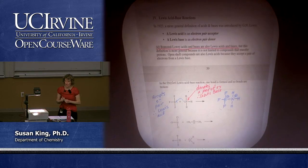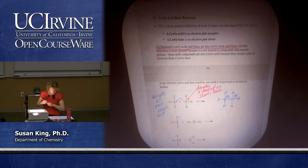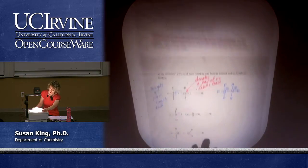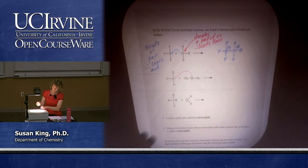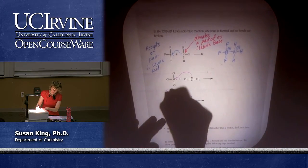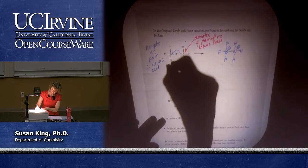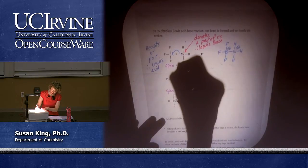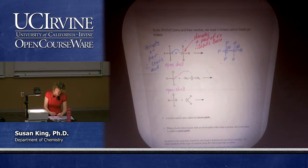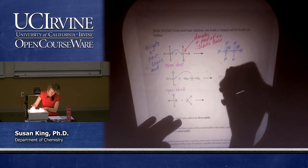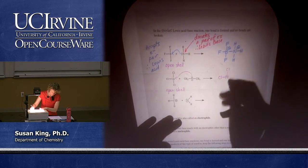Another really common Lewis acid that we're going to be working with this year is aluminum trichloride, AlCl3. That also likes to accept a pair of nonbonding electrons from another molecule. It is also an open shell compound — let's go back and label boron trifluoride as open shell as well. We can draw a similar Lewis acid-base adduct, and we are making a new covalent bond.